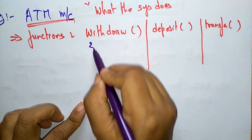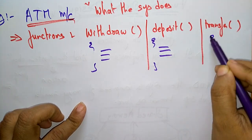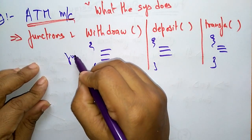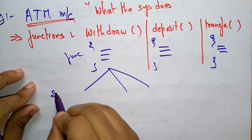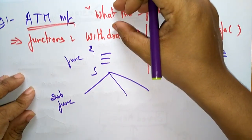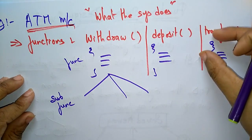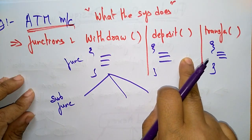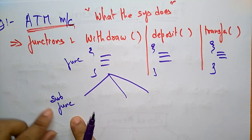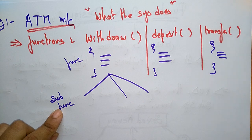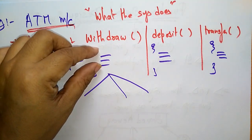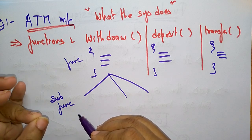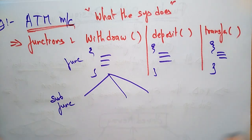We write a series of code and this series of code will perform some action. The ATM machine is a complete system; that system is divided into small functions. Again these functions are divided into sub functions. So to withdraw money — this consists of a piece of code, and again it is divided into sub functions like insert pin number, amount to withdraw, verification, and print.